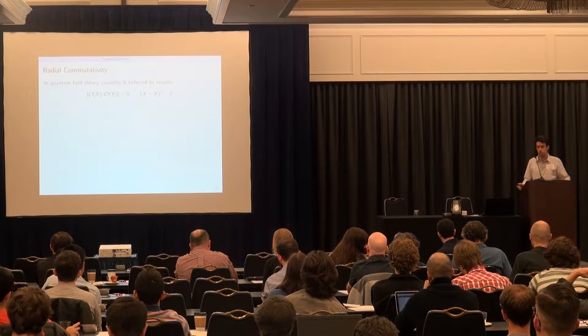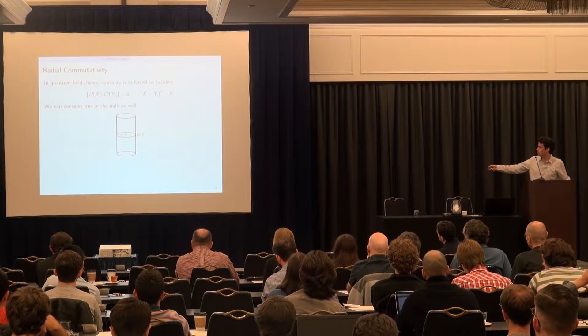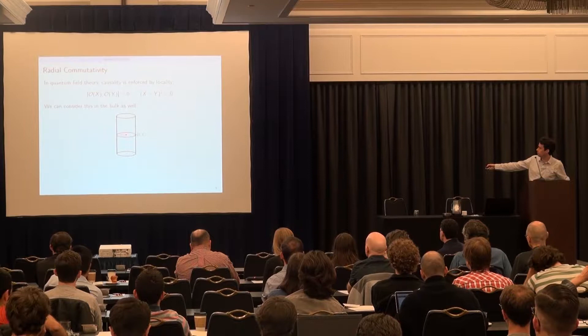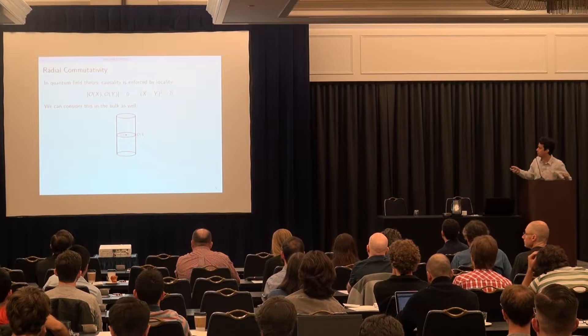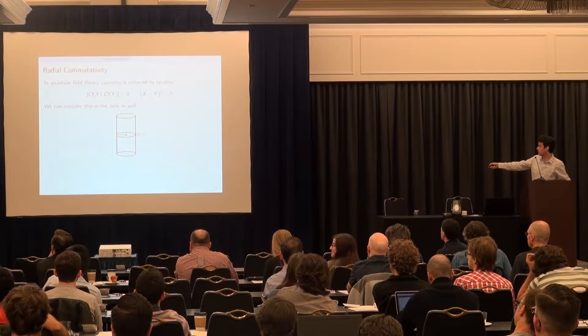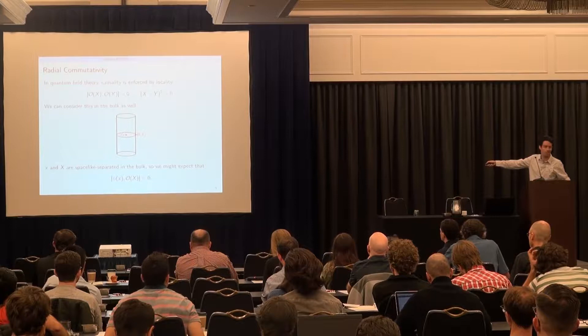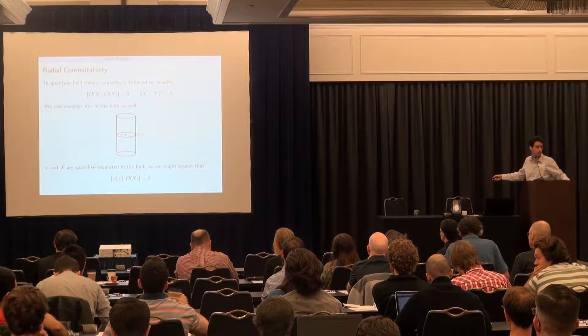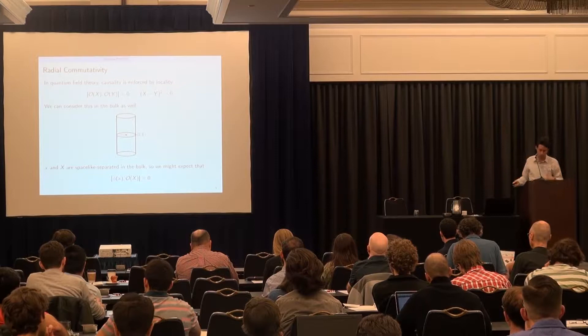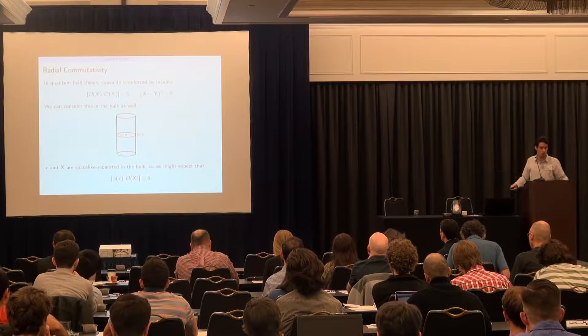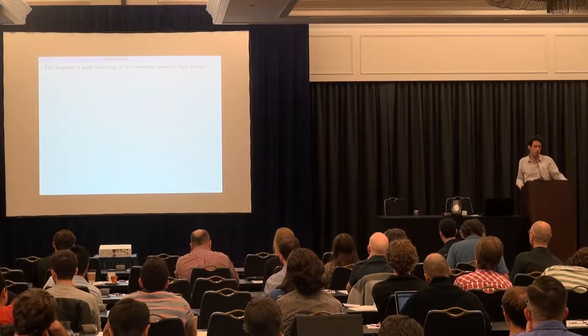We can think about this in the bulk too. Consider an operator phi in the center — we can consider its commutator with some operator on the boundary on the same bulk time slice. Since the disc is a time slice, this bulk operator and that boundary operator are spacelike separated, so since Lorentz invariance seems good, we might think these operators should commute.